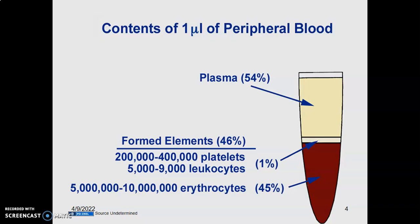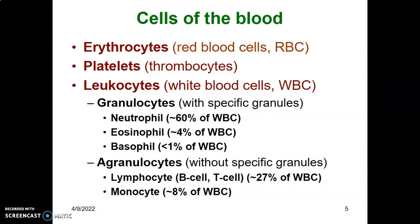Blood has two parts: a liquid part called plasma and a cellular part. We have three major types of cells: platelets, white cells (leukocytes), and red cells (erythrocytes). The red cells are the most abundant, occupying 45 percent. The leukocytes are divided into granulocytes, which have granules in the cytoplasm. The majority of granulocytes are neutrophils, followed by eosinophils at four percent and basophils at one percent.